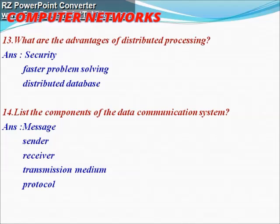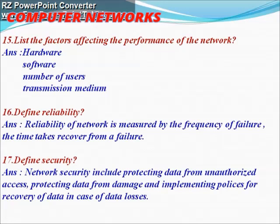Next question: list the components of a data communication system. The components include message, sender, receiver, transmission medium, and protocol. Next question: list the factors affecting the performance of the network. The factors include hardware, software, number of users, and transmission medium. Next question: define reliability.